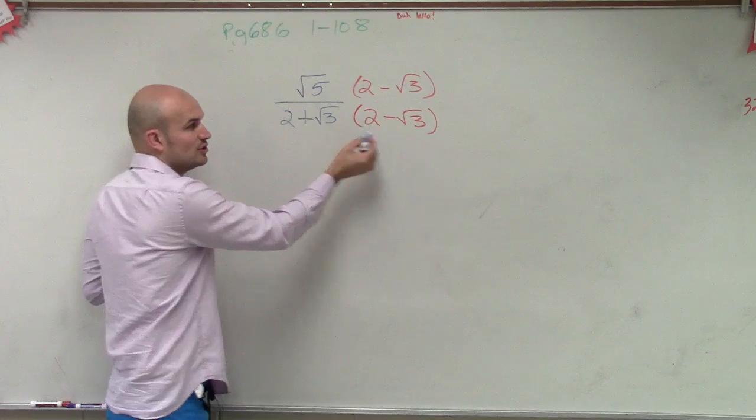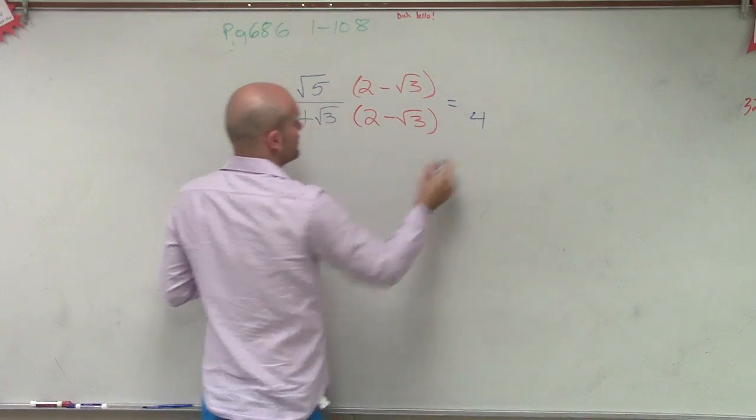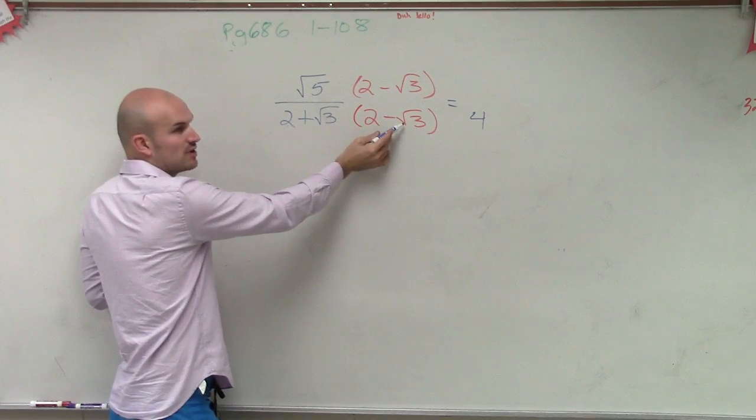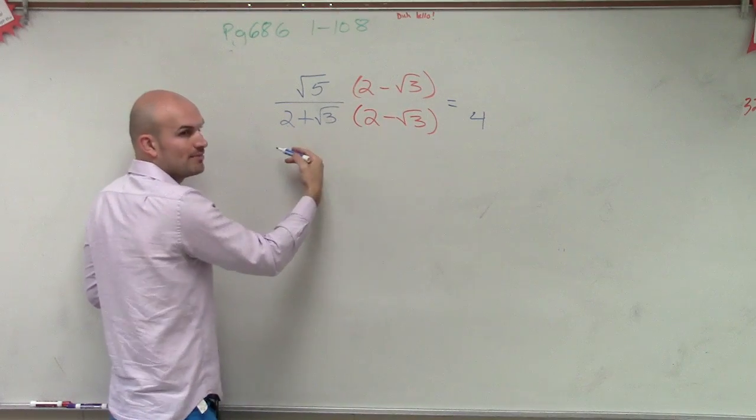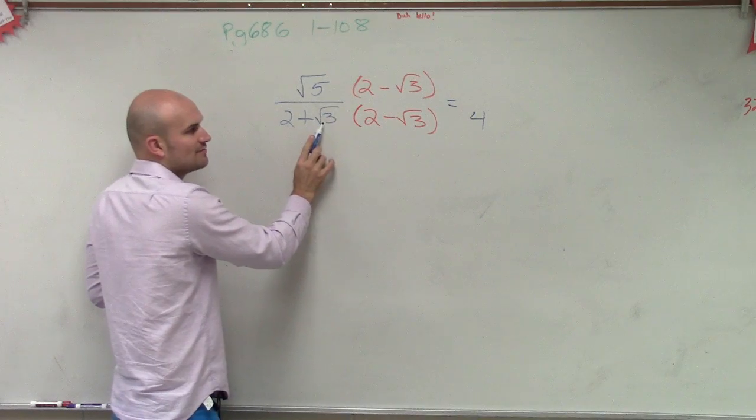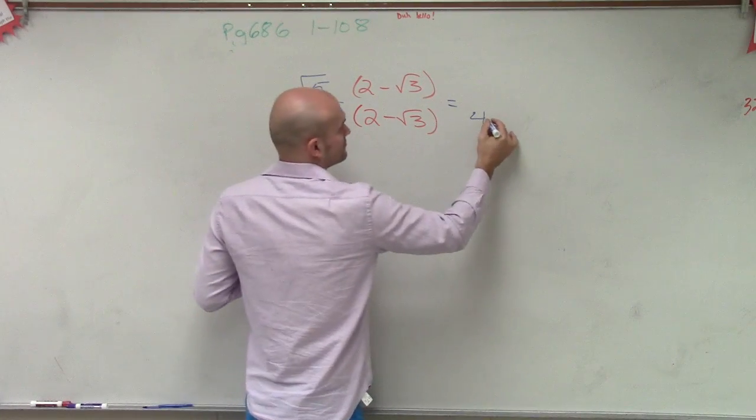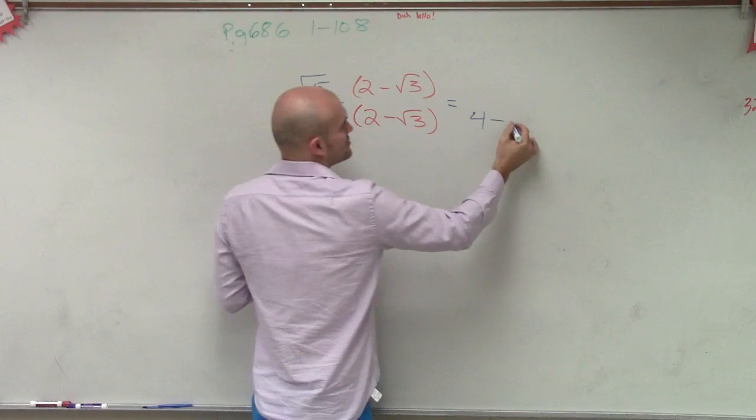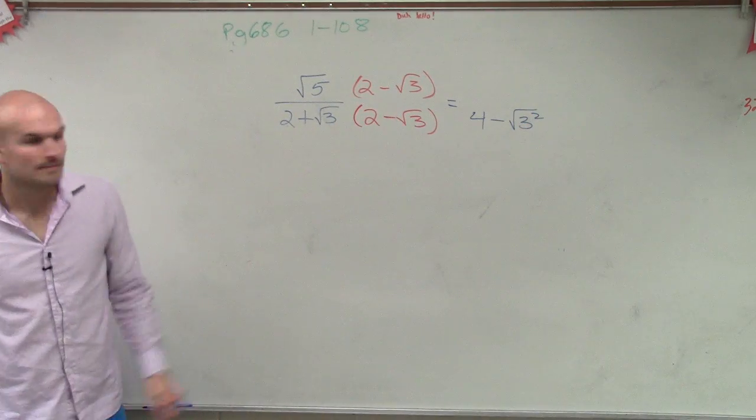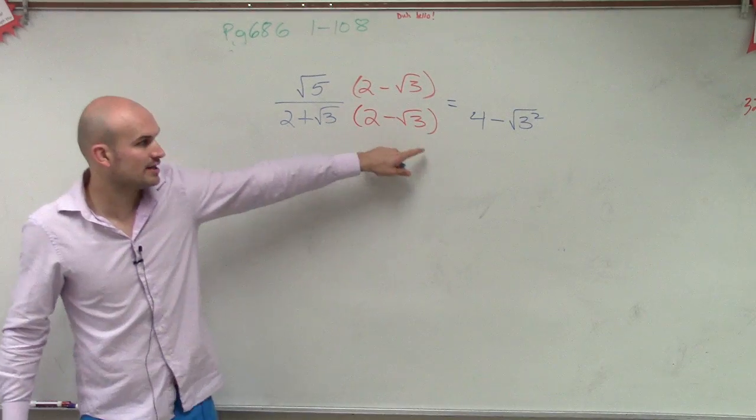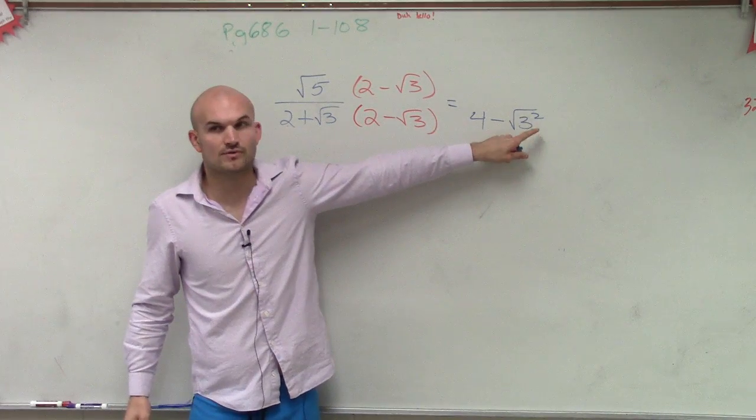Because you have 2 times 2, which is going to equal 4. And then 2 times negative square root of 3, plus 2 times square root of 3, those eliminate each other. So you don't have to worry about the middle terms. So then you're just left with a negative square root of 3 times square root of 3, which is the square root of 3 squared. Square root of 3 times the negative square root of 3 is negative square root of 3 squared.